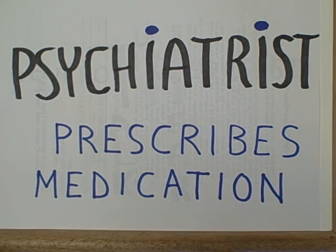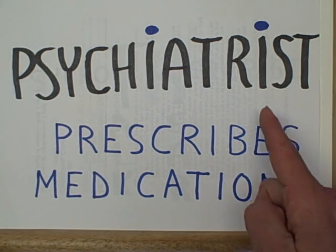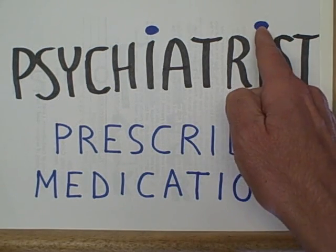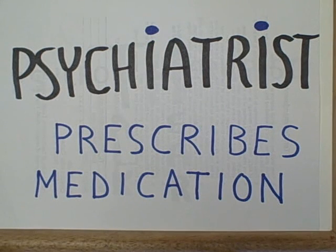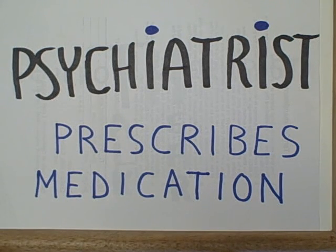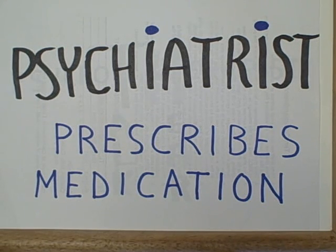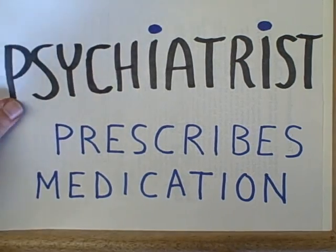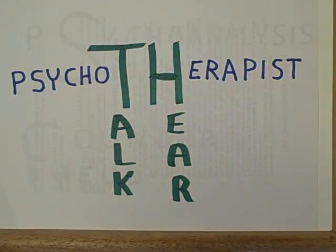I've written the word psychiatrist. Notice that the letter I is repeated twice, and I've put little dots over those I's. Those blue dots stand for Prozac pills. Because when you need a prescription of Prozac, you've got to see a psychiatrist, not a clinical psychologist. The psychiatrist can prescribe medication.